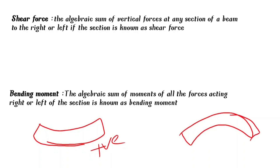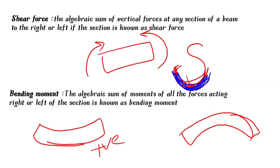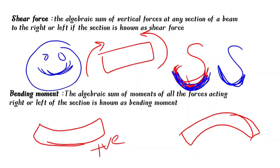A hogging bending moment is a negative bending moment. To remember: sagging looks like a smiley face — so it is positive. Hogging looks like a sad face — so it is negative bending moment.